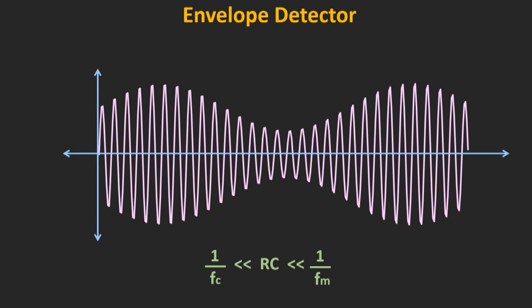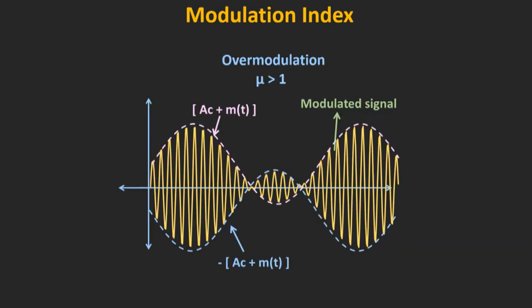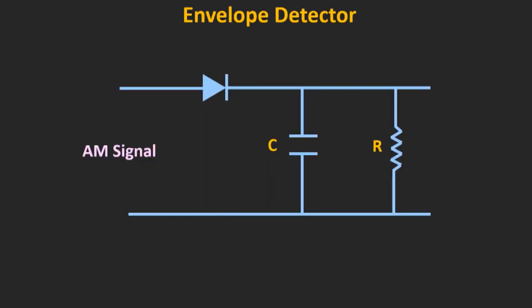The RC time constant should be optimum and meet these criteria for proper detection of the AM signal. Additionally, as mentioned earlier, the modulation index of the AM signal should be less than 1, because otherwise there will be distortion in the recovered signal. Now let's simulate this envelope detector circuit and look at some simulation results.